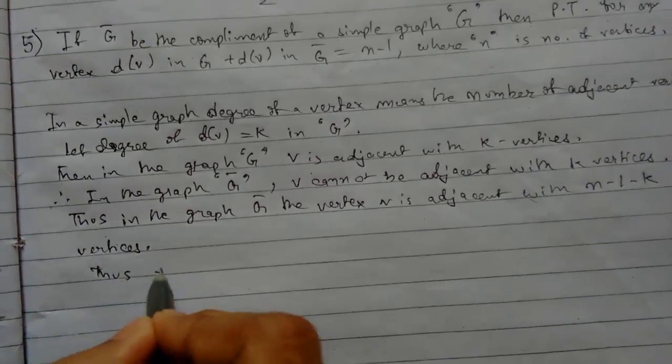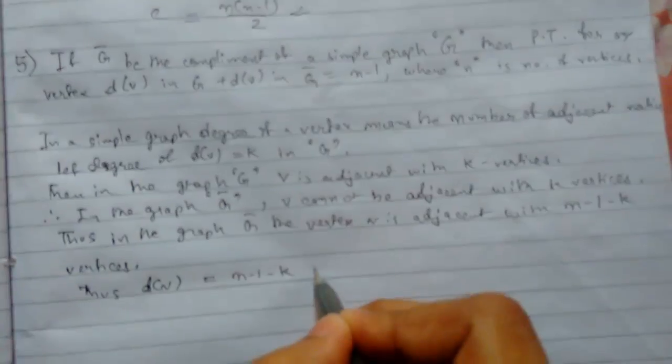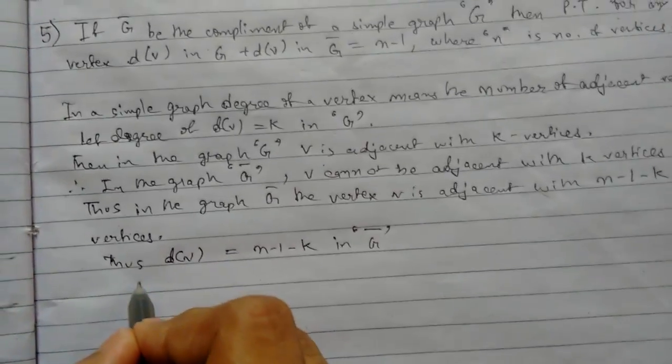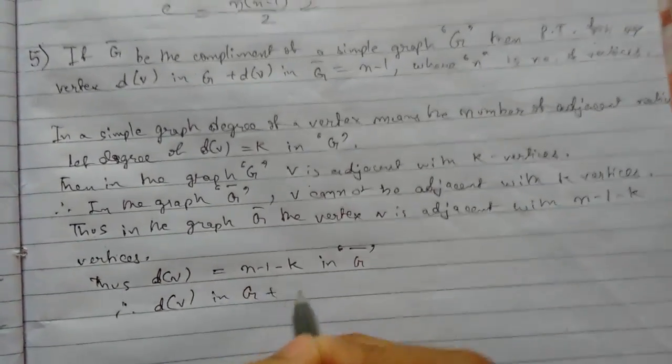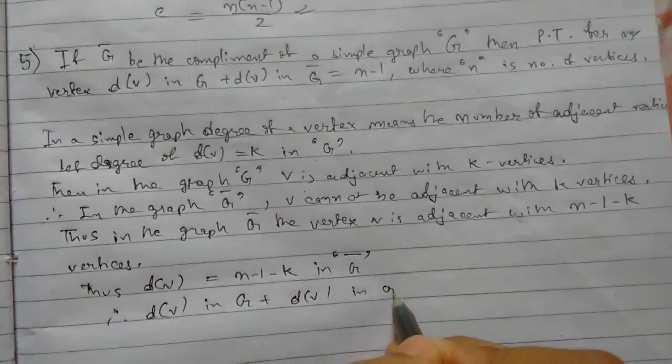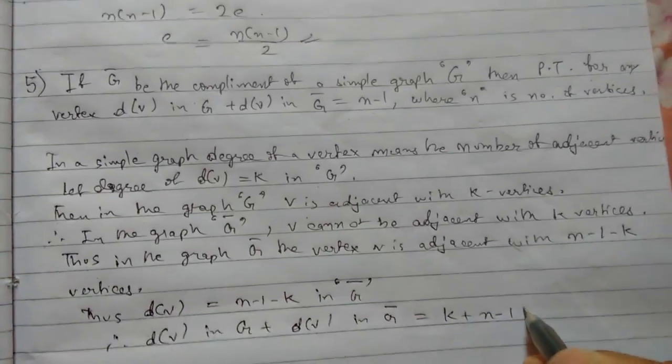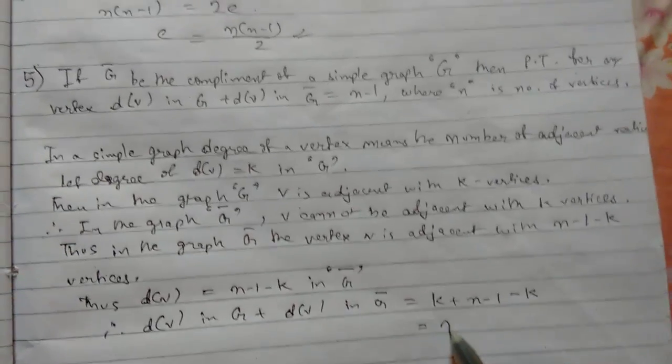Thus, degree of vertex equals n minus 1 minus k in g bar. And therefore, degree of vertex in g plus dv in g bar will be equals to k plus n minus 1 minus k. That is equal to n minus 1.